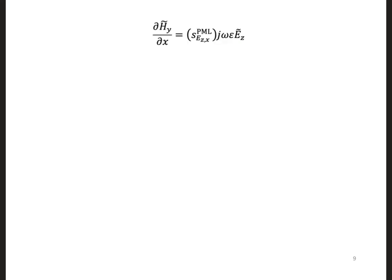Now we have the expression that's shown on this slide. We ultimately want to solve for the future value of ez. So let's isolate this j omega epsilon and move s to the other side, the s tensor coefficient.